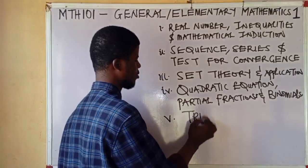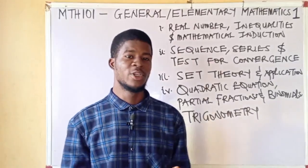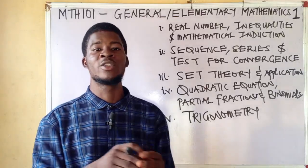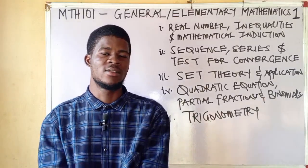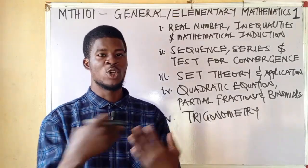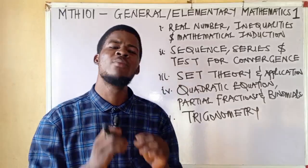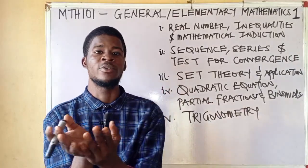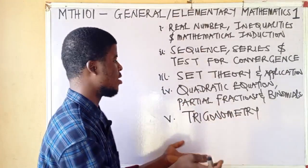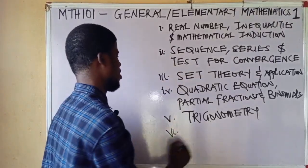The fifth topic is Trigonometry. We cover circular measure, radian measure, angles in quadrants, complementary angles, and how to solve trigonometric equations. We discuss the elementary ideas behind secant, cosecant, tangent, cotangent, and trigonometric identities such as sin²x + cos²x = 1 and tan x = sin x / cos x. Solving trigonometric equations is also an important part of this topic.